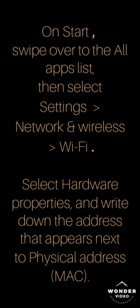If your Wi-Fi network uses MAC address filtering, add the MAC address for your phone to the access list on your router before connecting. To find the MAC address for your phone, click Start, swipe over to the All Apps list, select Settings, go to Network and Wireless, then Wi-Fi, select Hardware Properties, and write down the address shown next to Physical Address.